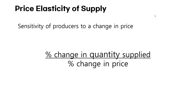Now let's take a look at the price elasticity of supply. The price elasticity of supply is very similar to that of demand: the sensitivity of producers to a change in price. The formula is the percentage change in quantity supplied divided by the percentage change in price. In this case, the value is likely to be positive, since an increase in quantity supplied usually means the price increased.